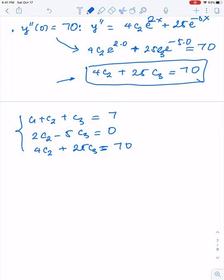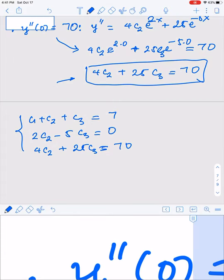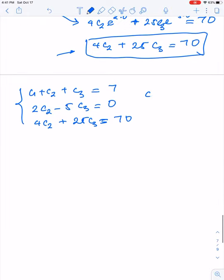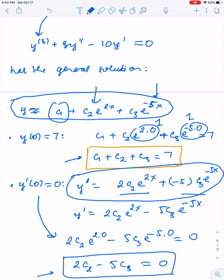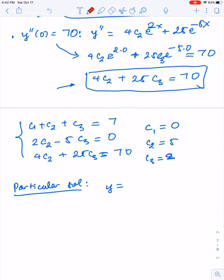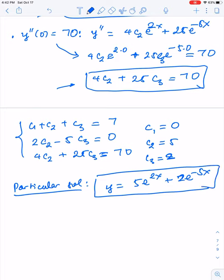Now we can solve this linear system. If you have a calculator that can do it, just use it. It gives you c1 = 0, c2 = 5, and c3 = 2. The final particular solution is y = 5e^(2x) + 2e^(-5x). This is the final solution.